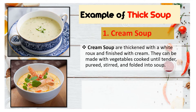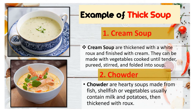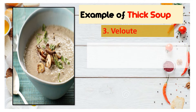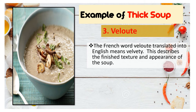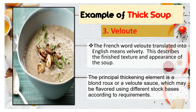The next example of thick soups is the chowder. Chowder are hearty soups made from fish, shellfish, or vegetables, usually containing milk and potatoes, and thickened with a roux. Another example of thick soup is the velouté. The French word velouté describes the finished texture and appearance of the soup. The principal thickening agent used in making a velouté soup is a blanc roux, which is caramelized slightly to give its darker blonde color, and may be flavored using different ingredients according to the dish you are going to prepare.